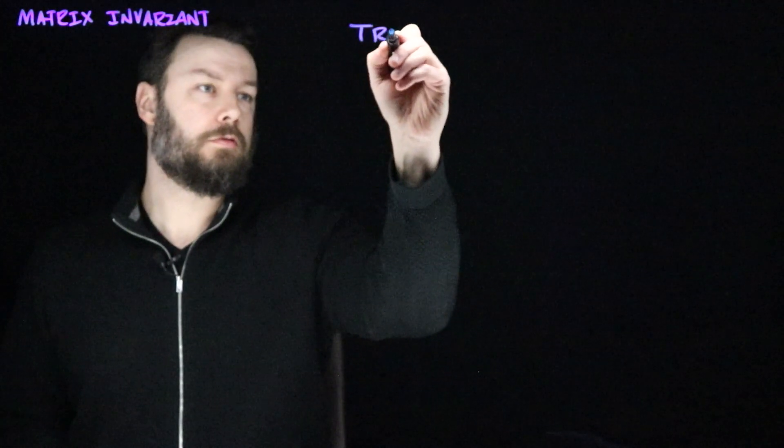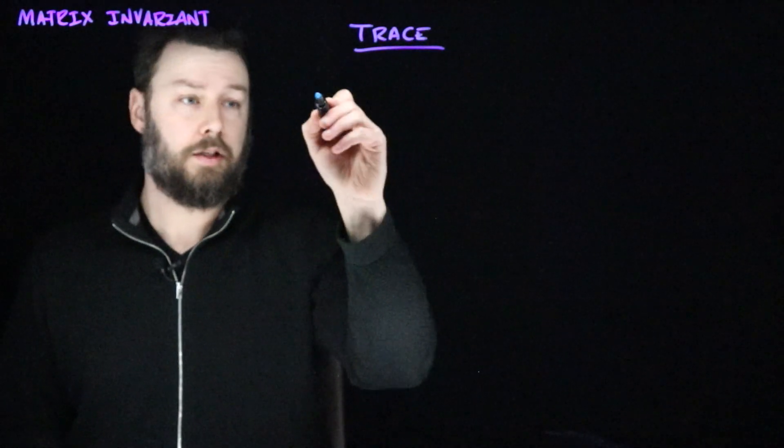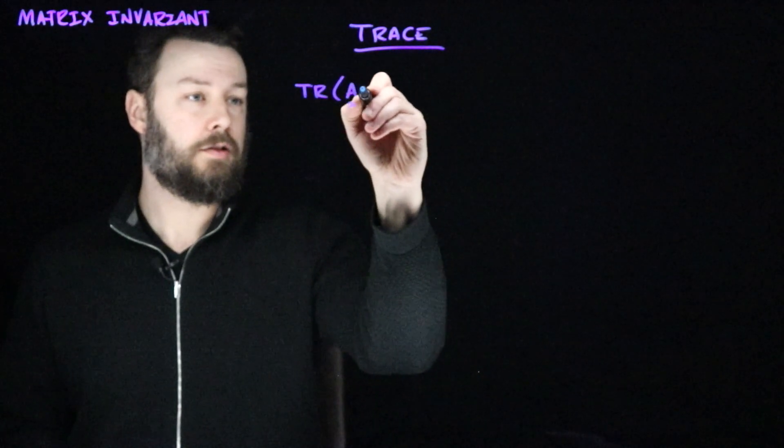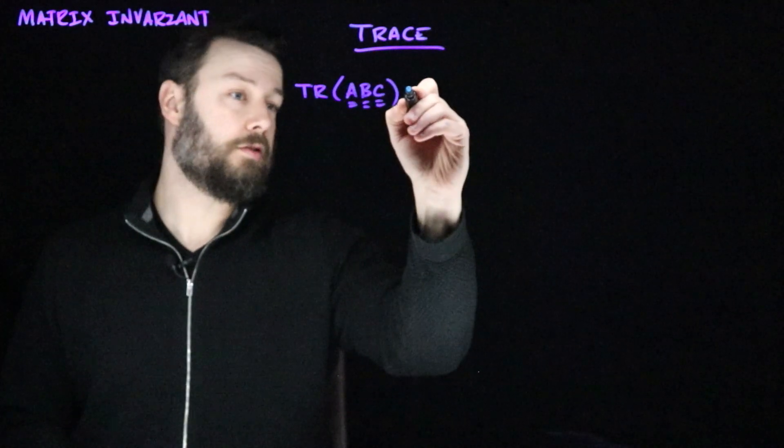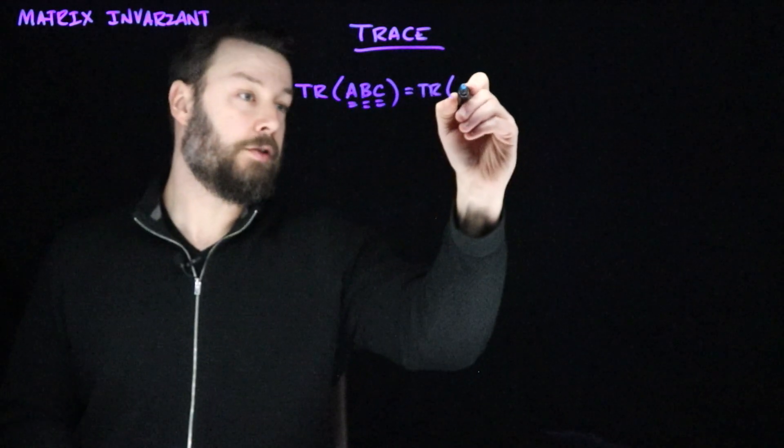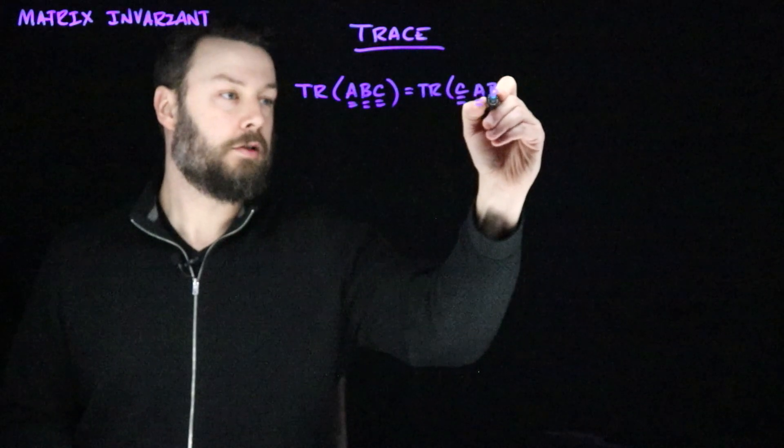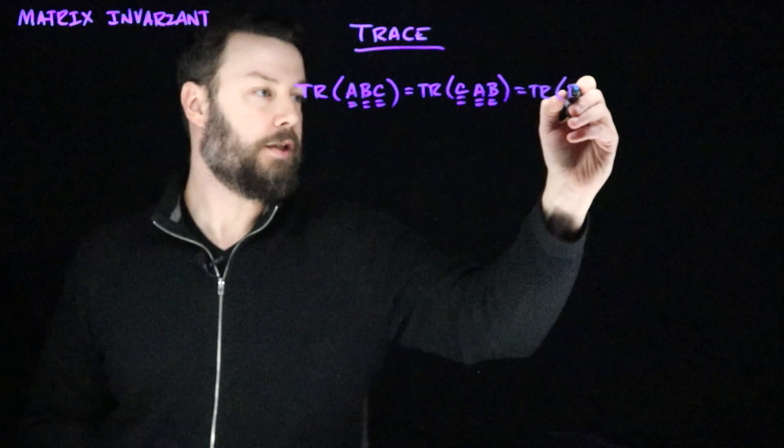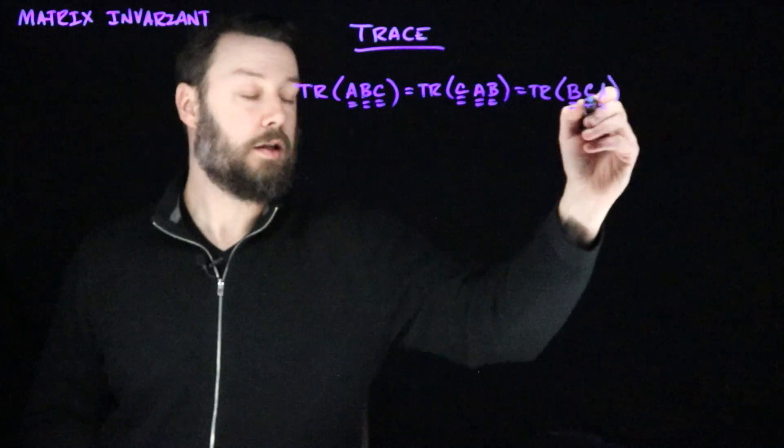So, the thing we just convinced ourselves of was this idea that if I have the trace of A multiplied by B multiplied by C, and again, assuming that they're dimensionally consistent, then I could pull the C around and do this and have CAB. And I could pull the B around and get trace BCA as well.